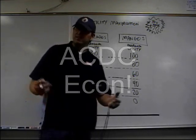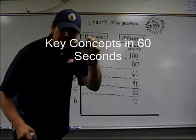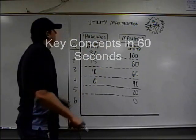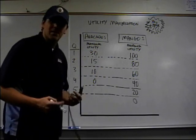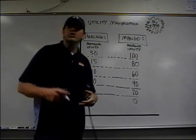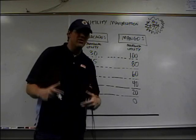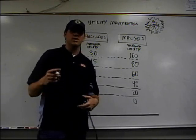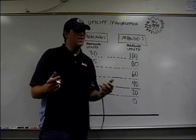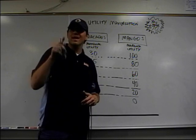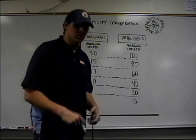Hey, I'm Mr. Clifford and this is ACDC Econ, Key Concepts in 60 Seconds. We're going to talk about utility maximization. Your teacher has already taught you about the law of diminishing marginal utility — that is, the more you consume of anything, the less and less satisfaction you get from each new unit.